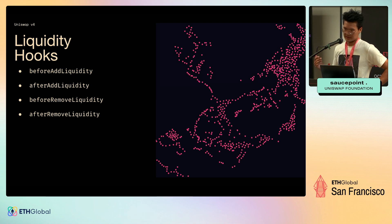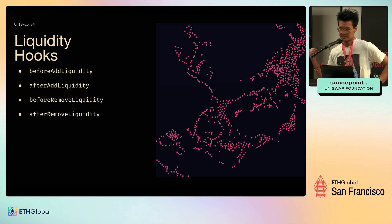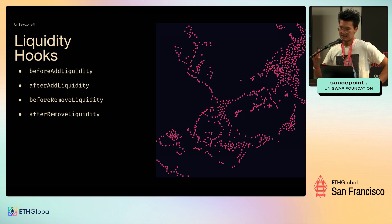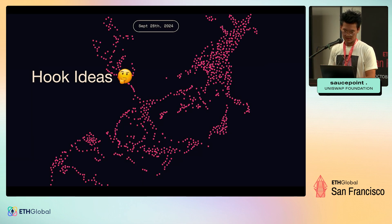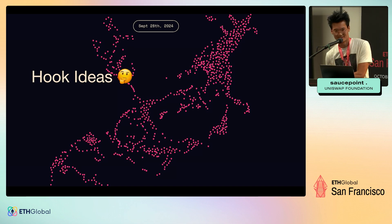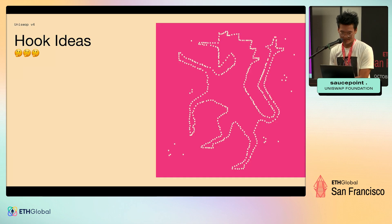There are also hook functions on the liquidity side, separated out based on adding and removing liquidity — that was a security implementation. Now on to hook ideas, which is where the rabbit hole really opens up.